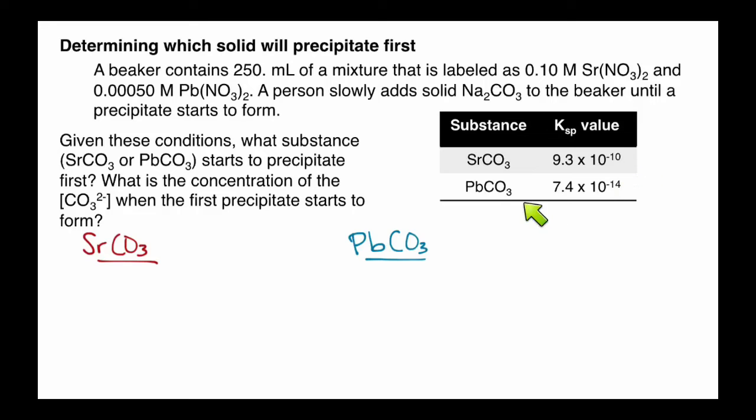Just look at these two. If we had the same amount of carbonate and strontium lead ions coming in, then we could just go by the Ksp value and see that this Ksp value is smaller, meaning that we're going to reach this first, and so lead carbonate is what will precipitate first. But, if we look back at the problem, we see that we actually have a lot more strontium ions to start with, 0.1 molar, than we do lead ions, 0.0005 molar.